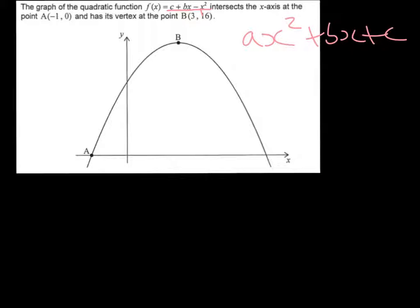The first part, part a, tells you to write down the equation of the axis of symmetry. Whenever a question tells you to write down, or the command word is write down, it means the question should be fairly straightforward and you shouldn't have to do much working out. We're told that this point here, point B, has coordinates (3, 16).